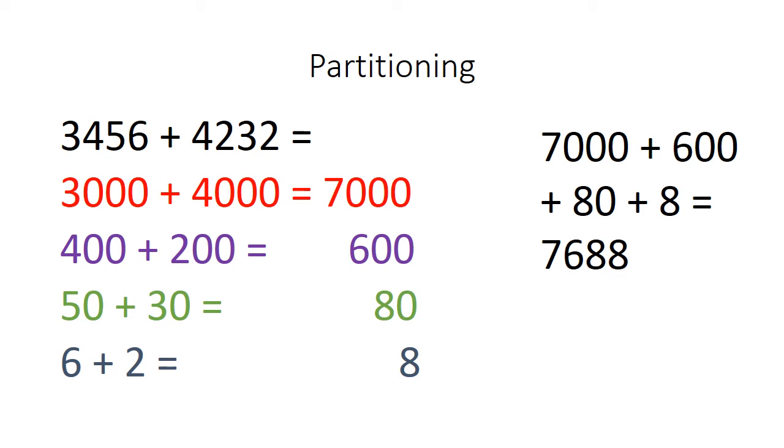I have 3456 add 4232. In my head this strategy would be really tricky to count or round. Therefore partitioning is much easier.